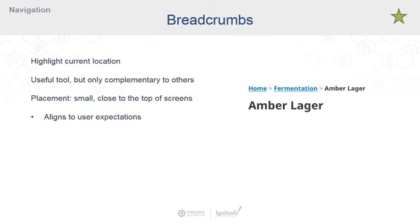Let's talk about breadcrumbs. Breadcrumbs tell a user where they are now and give context to where they've come from. They provide links which bring you back up to the top level of an application, one step at a time. Breadcrumbs work really well when used alongside other navigational tools, but not so great on their own. You wouldn't want to use a breadcrumb as both a navigational tool and the page title — use it in conjunction with the page title. That leads to a little repetition, but that's okay because it really boosts usability. Users expect breadcrumbs to be at the top of the content and pretty small.